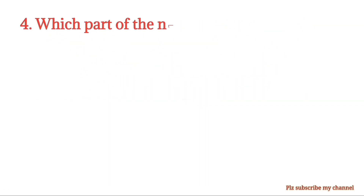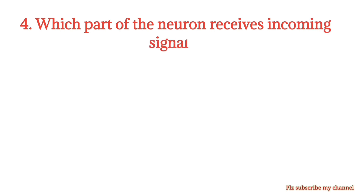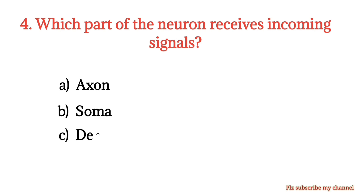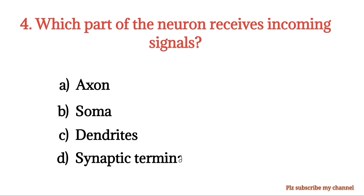MCQ number 4. Which part of the neuron receives incoming signals? Option A: Axon. Option B: Soma. Option C: Dendrites. Option D: Synaptic terminals. The right option is Option C.